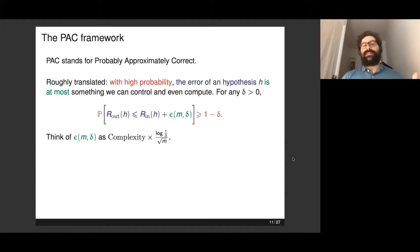Roughly translated, what PAC means is that with high probability—that's the meaning of that part in red—with a probability which is arbitrarily close to one, the error of one particular hypothesis is at most something we can control and even compute. For any δ > 0, the probability that the error R out of H is at most R in of H plus a complexity term epsilon m δ is at least 1 minus δ. This term is responsible for the approximately correct part in the acronym. That's what you have to pay to have this kind of guarantee.